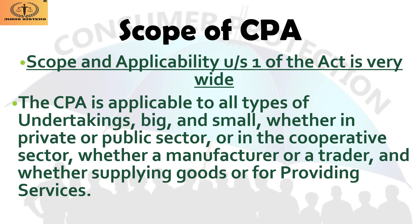To protect consumers against such malpractices, consumer protection is needed most. The scope and applicability under Section 1 of this act is very wide. The Consumer Protection Act is applicable to all types of undertakings — big or small, private or public sector, cooperative sector, manufacturer, trader, goods supplier, or service provider. If any injustice is done to a consumer by any of those sectors, that sector will come under the CPA, so the consumer can file a case against them.